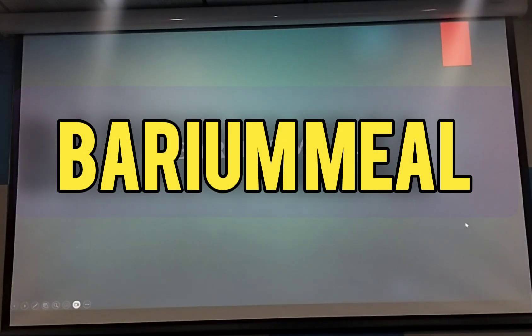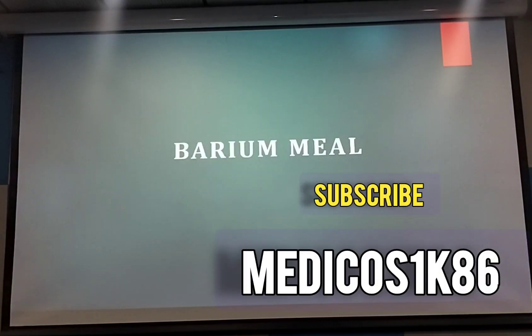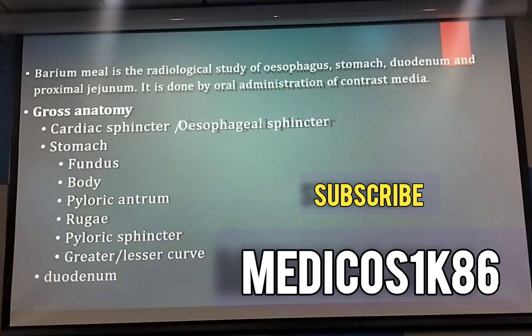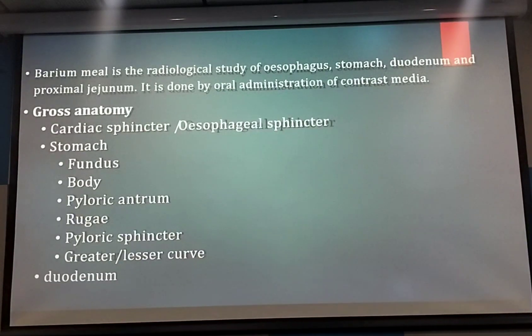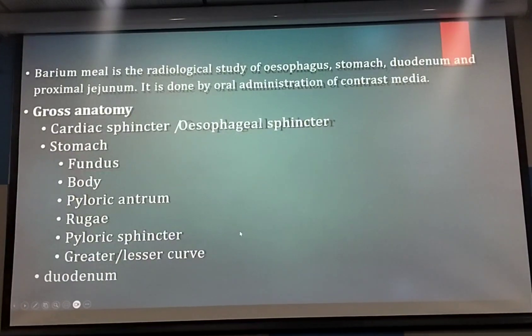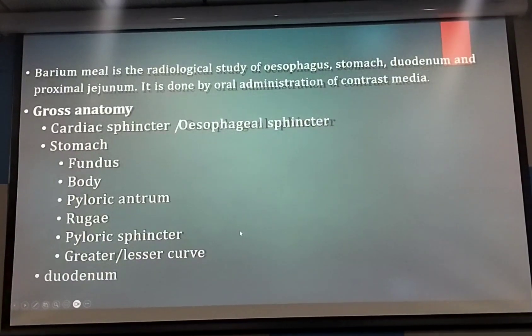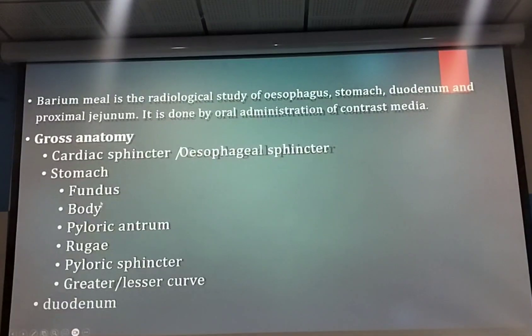What is barium meal? Barium meal is used for the stomach and mainly for the stomach and upper small intestine. Swallow is only used for the upper stomach. Barium meal means small intestine — it is for the stomach and upper small intestine, that is the duodenum.